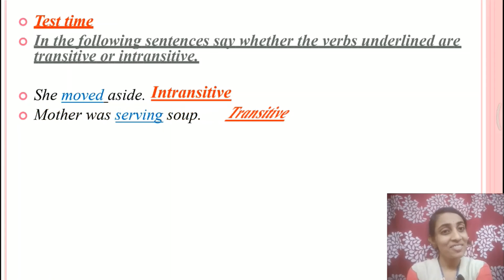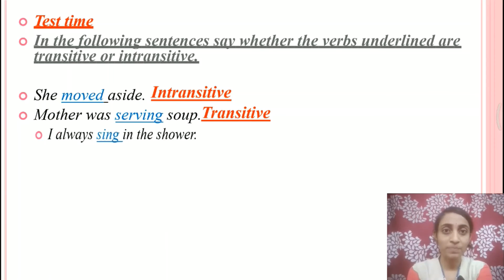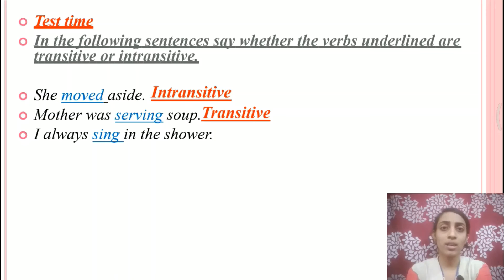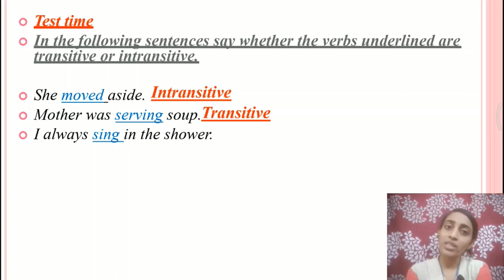Next example: 'I always sing in the shower.' What do I always sing? No answer. Whom do I always sing? No answer. No answer means no object. But the meaning of the sentence is still complete, so the verb 'sing' is an intransitive verb.